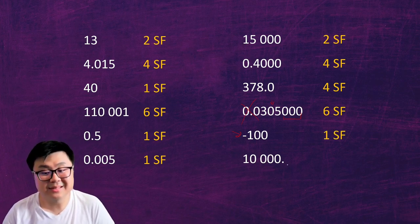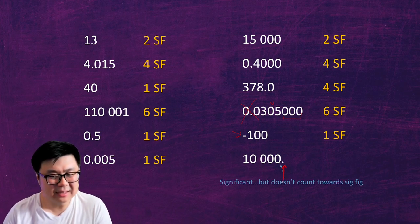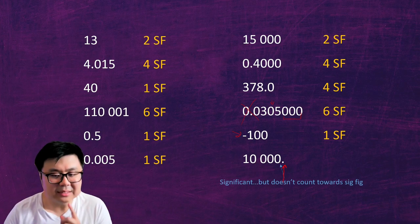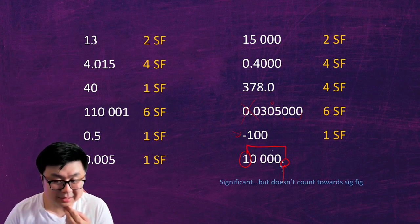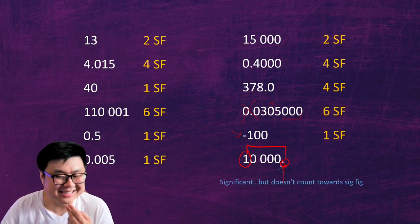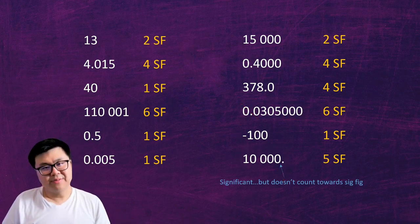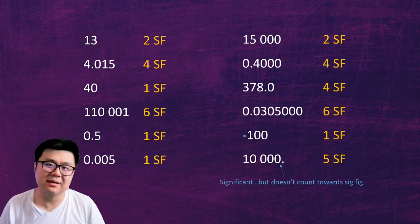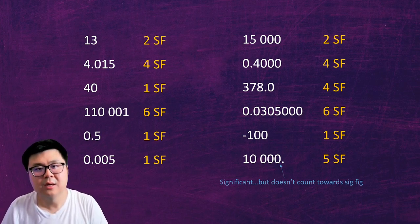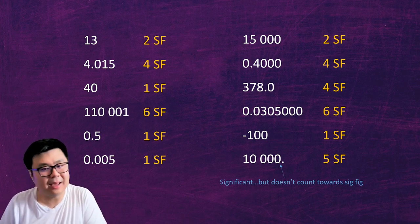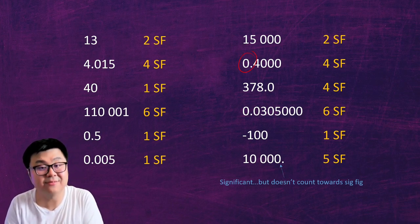Finally, 10,000 with a decimal at the end — that decimal is a bit weird. It counts as significant, but it's not a significant figure on its own. The one in the front is significant and is a significant figure. The decimal is significant, which traps all the zeros in the middle as per rule two, but the decimal itself doesn't count as a sig fig. So we have five sig figs: the one and the four zeros. This rule only applies to a decimal at the very end of a number, not to any other decimal like the one in 0.4.